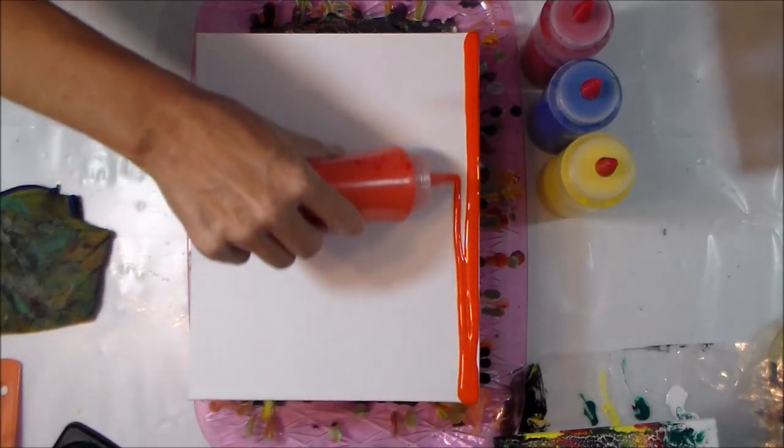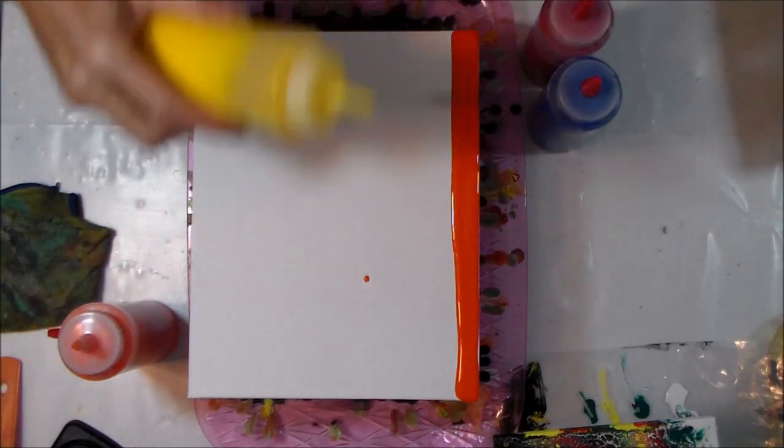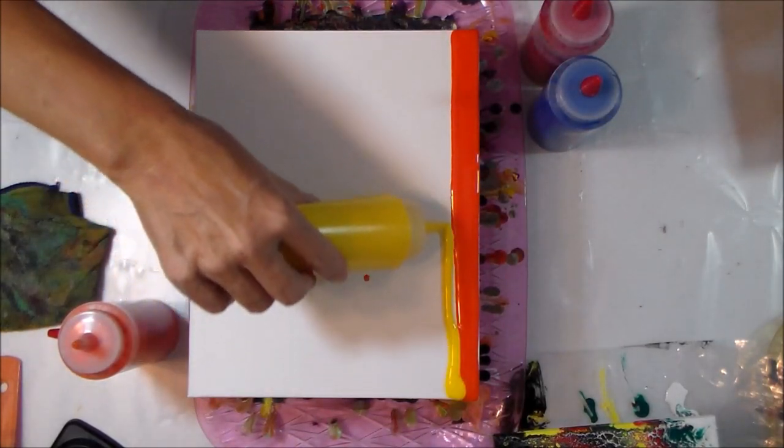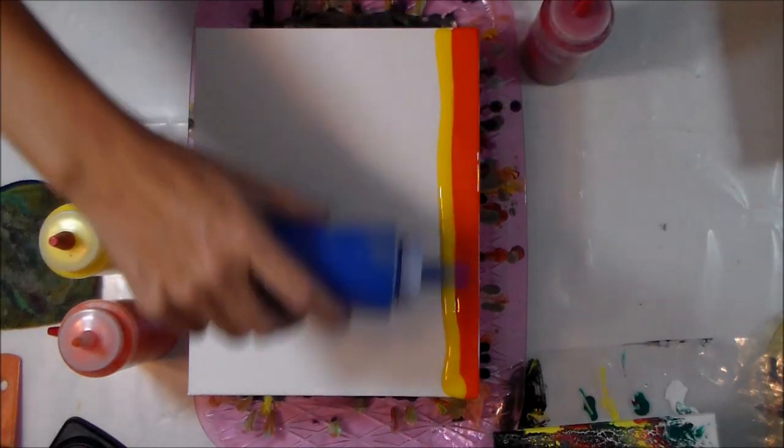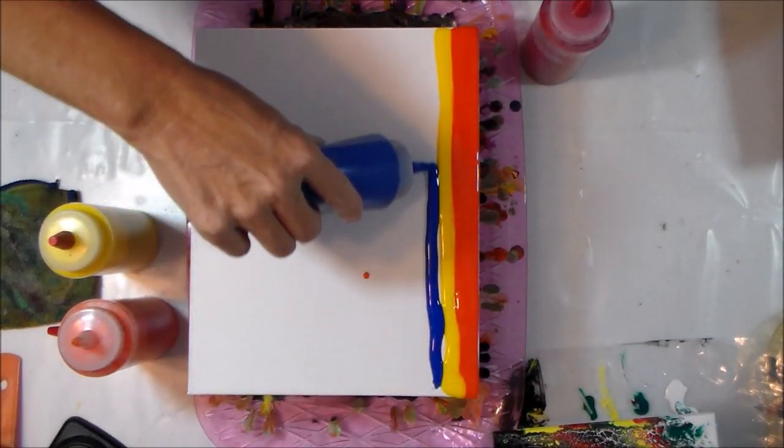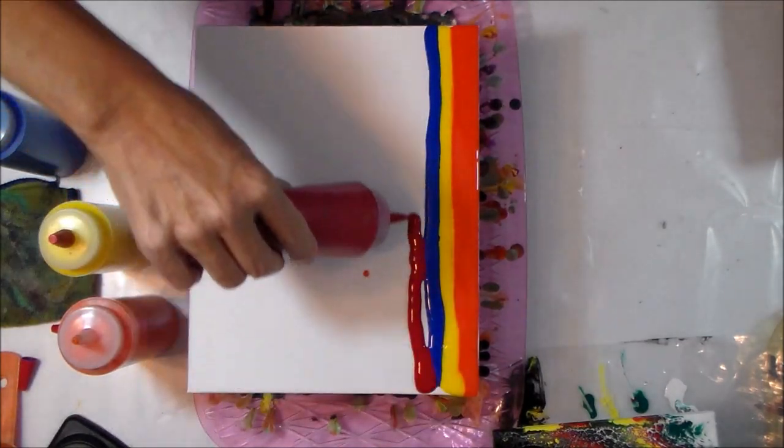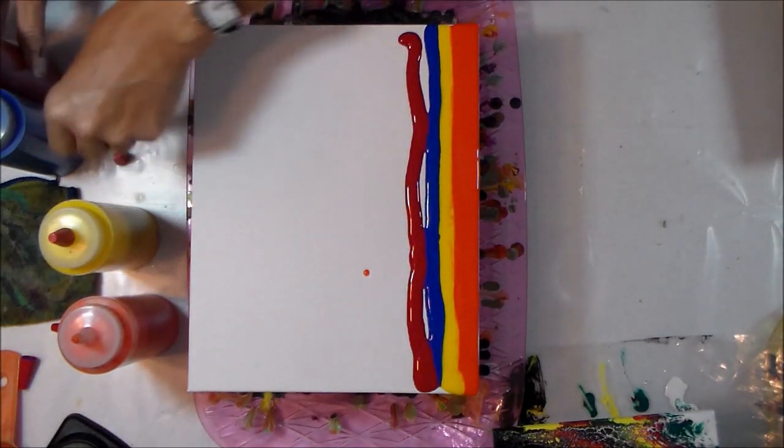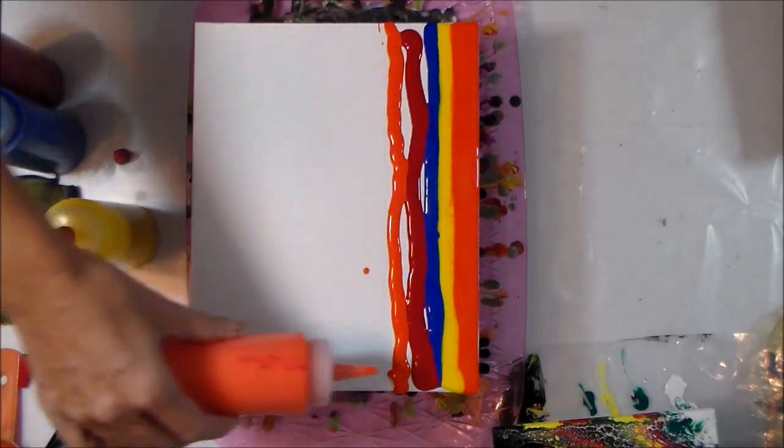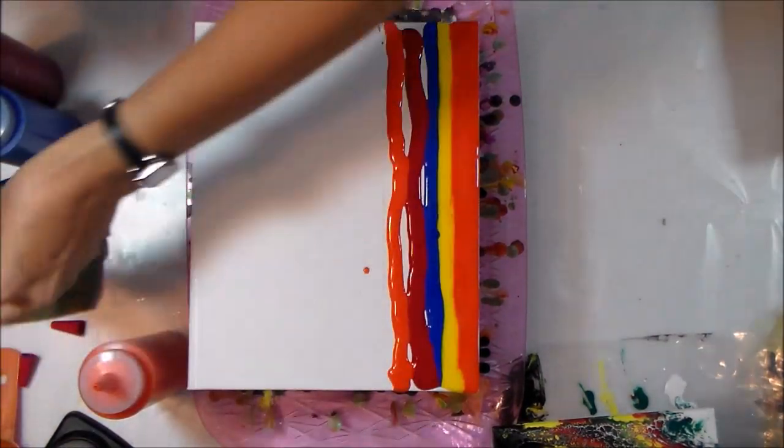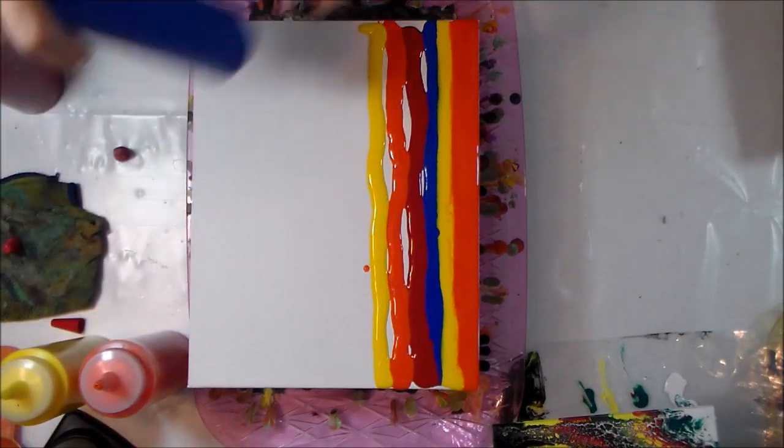A bit of orange. These are all pre-mixed. I like to keep the colors that I use most often or the most popular colors in these squeezy bottles, makes them easy to use. I'm just going to put some stripes. I've only got four colors, that was all I did before and it still came out looking lovely.